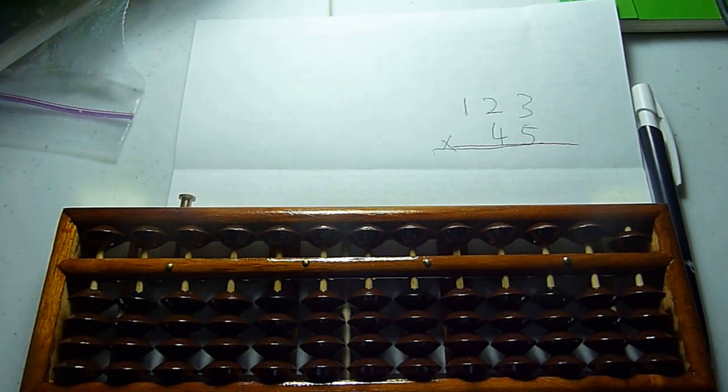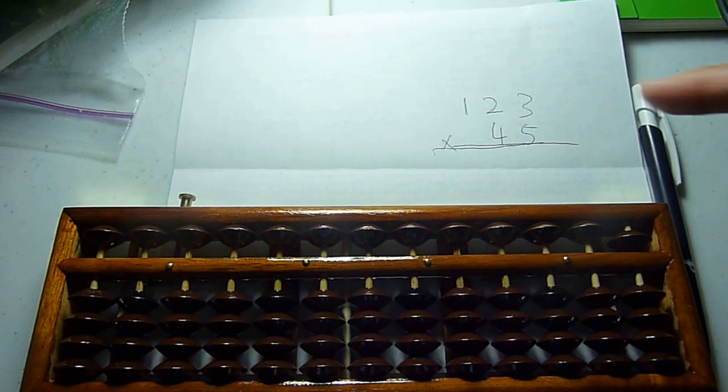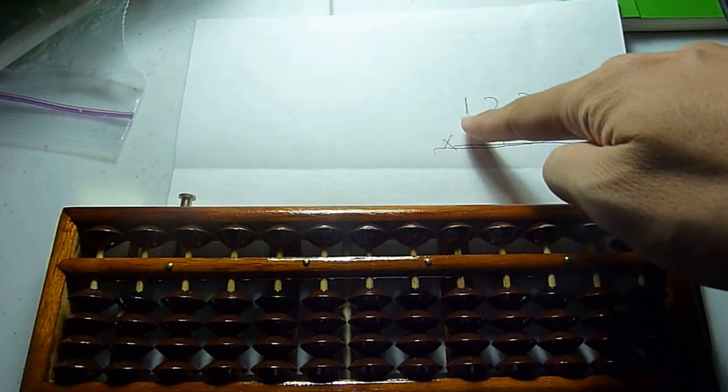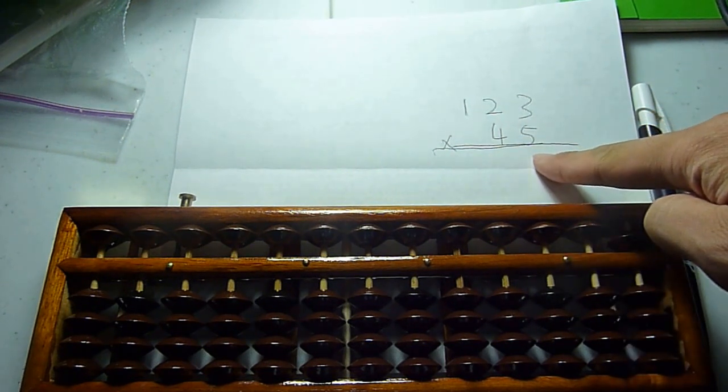Now, the rule with multiplication is the same thing as with addition, subtraction, and division on abacus, which is we always calculate from left to right.